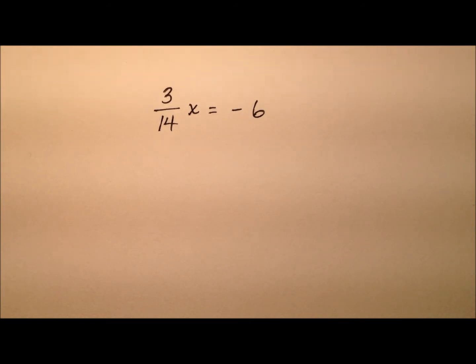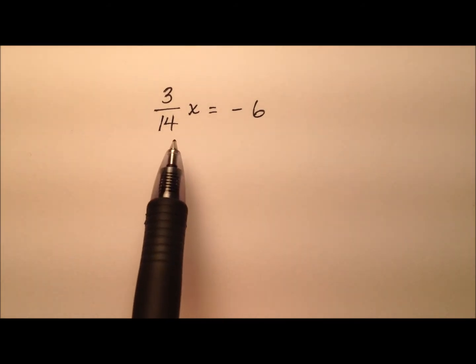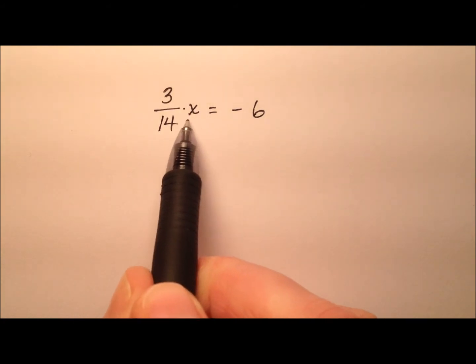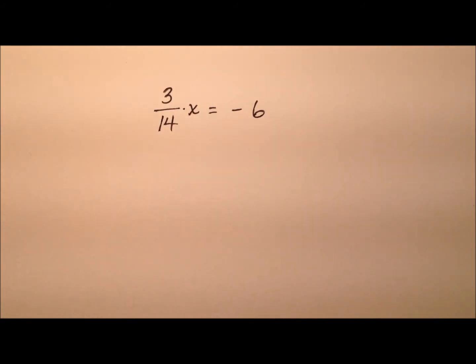In this example, we have an equation that we're going to solve, and it looks like we have 3/14ths being multiplied by some number x, and when we do that we get negative 6.